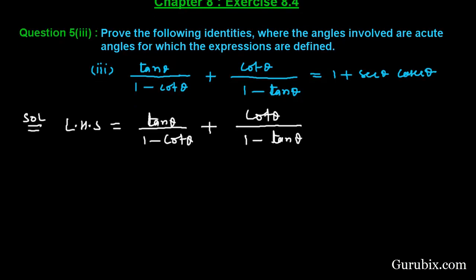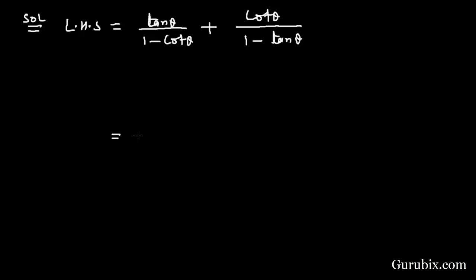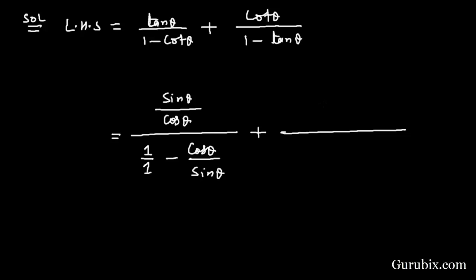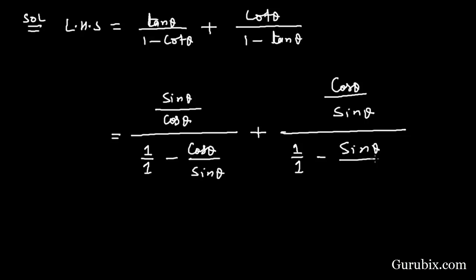Now we shall change tan θ and cot θ into sine and cosine. We can write tan θ as sin θ over cos θ, and cot θ can be written as cos θ over sin θ. Similarly, the second term has cot θ written as cos θ over sin θ, and tan θ written as sin θ over cos θ.